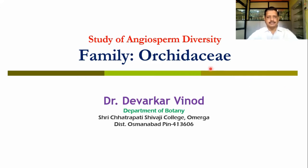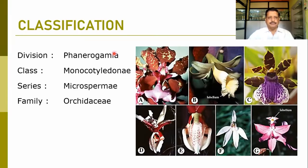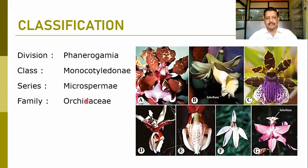Today we are going to discuss one of the important families from Monocotyledon and one of the largest families — the family Orchidaceae. This family Orchidaceae belongs to the division Phanerogamia, class Monocotyledone, series Microspermia. You can find here these are the beautiful flowers from the same family.